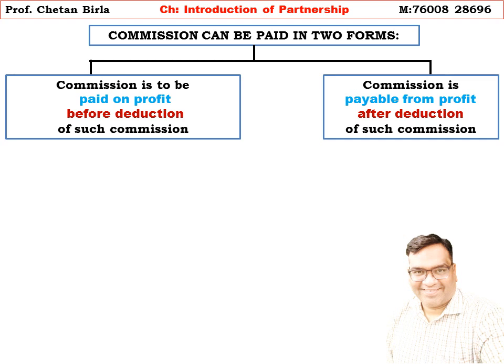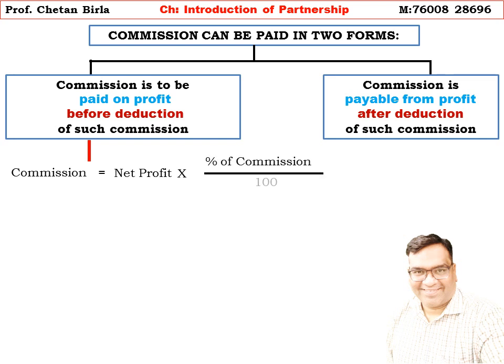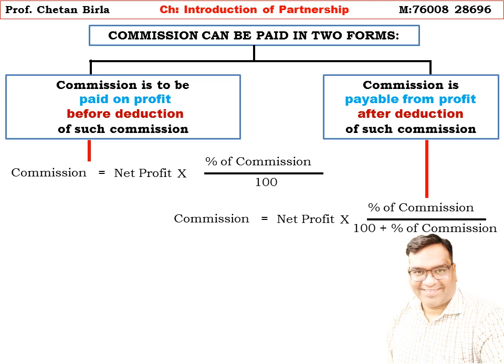So commission is to be paid on profit. Before deduction of such commission, the formula is: Commission is equal to net profit multiplied by percentage of commission divided by 100. For commission payable from profit after deduction of such commission, the formula is: Commission is equal to net profit multiplied by percentage of commission divided by 100 plus percentage of commission.